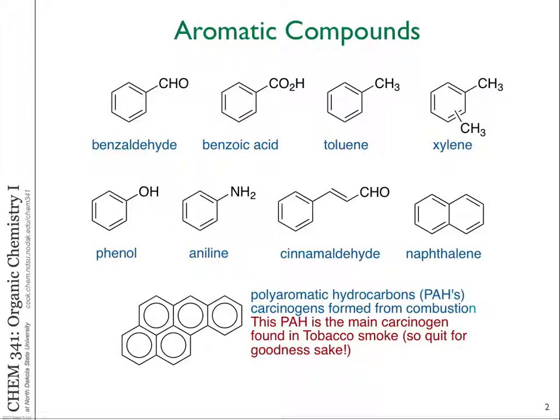A lot of these polyaromatic hydrocarbons are carcinogens. If anyone smokes, this is what you're putting into your lungs — it oxidizes and then intercalates into your DNA and causes mutations. Some of these compounds also form when you grill your hamburger and get that black char — some polyaromatic hydrocarbons. So even grilling heat can be a problem.